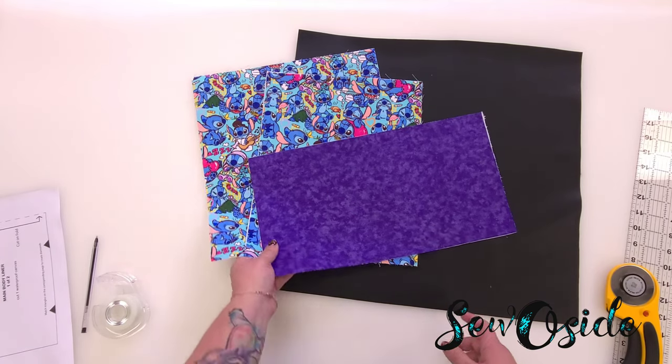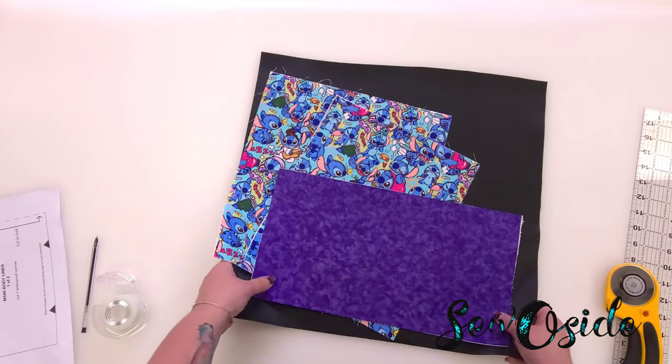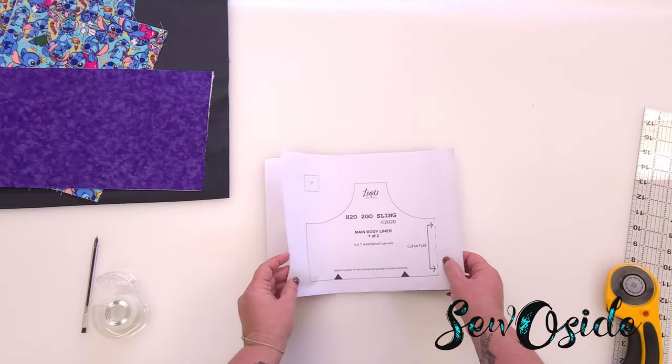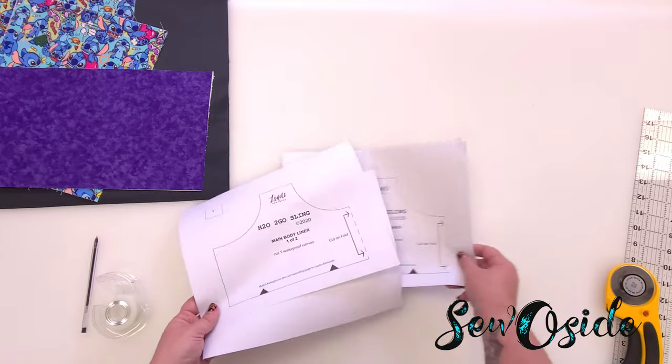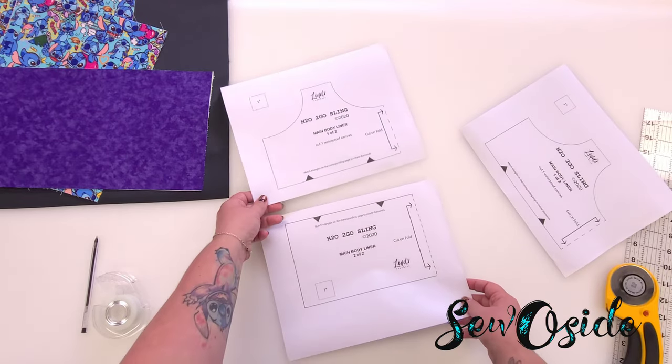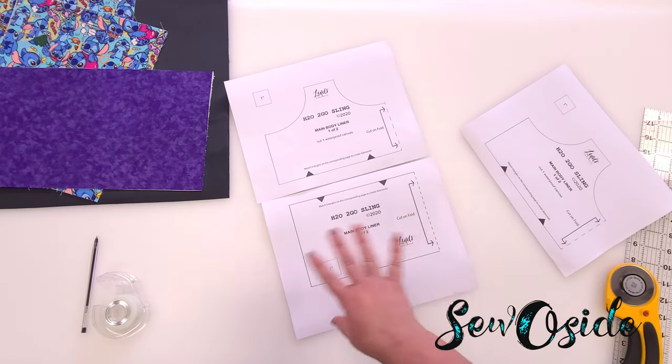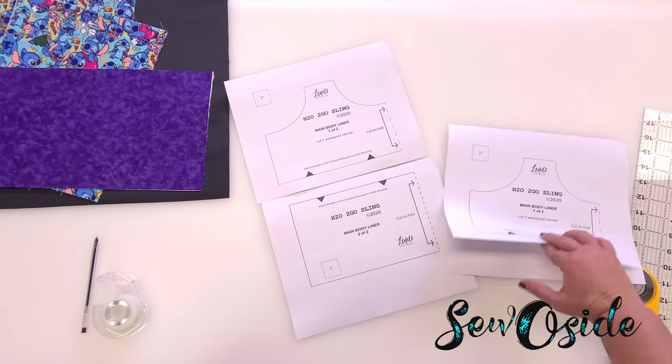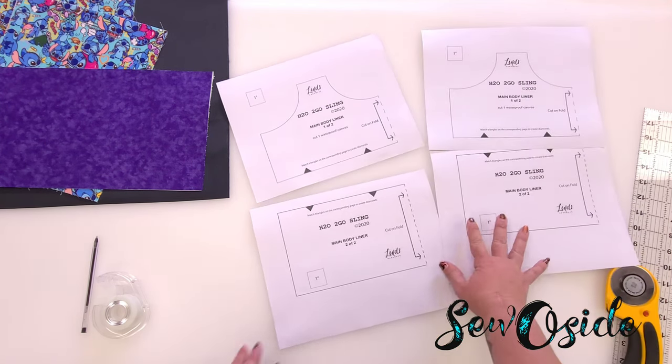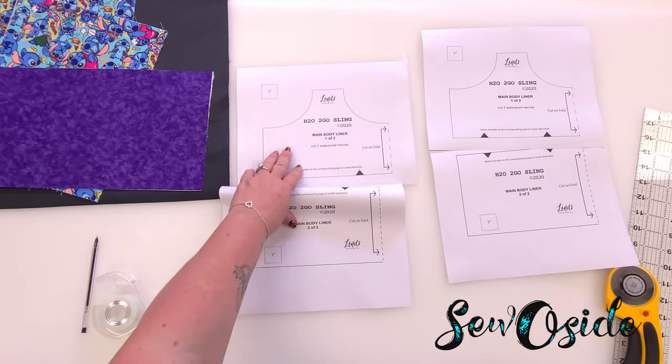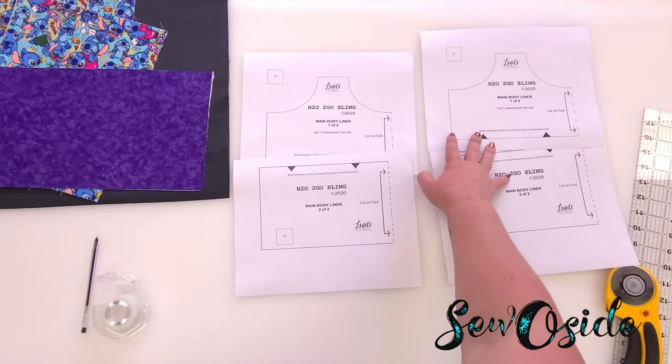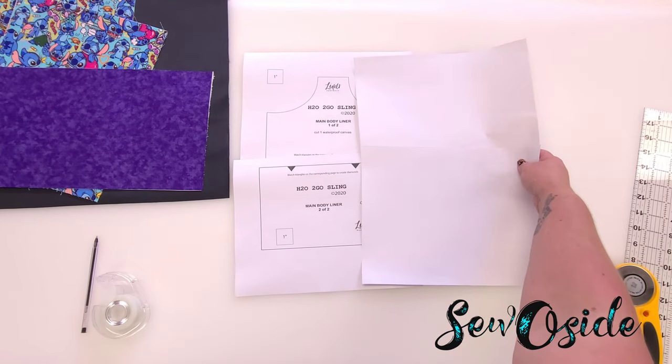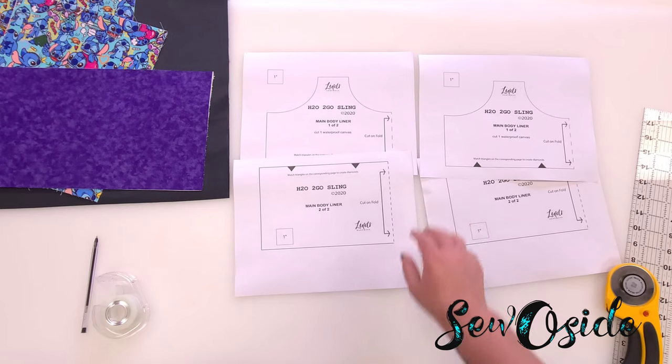So first things we're going to start with is to make the actual pattern. In order to do that, we're going to take our pattern pieces, print it out from the original pattern. There's a link to purchase it in the description here. We're going to go ahead and put this together and like I said, I print out two of them very specifically because I'm going to print one together to put it this way and then I'm going to tape the other one together and put it this way so that we make one big piece. So let's start that.